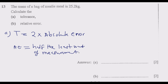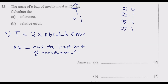In this case we are measuring 25.2, and the measurement is increasing in units of 0.1 — from 25.0, then 25.1, then 25.2, then 25.3, all the way up to 26.2. So 0.1 is the least unit of measurement.